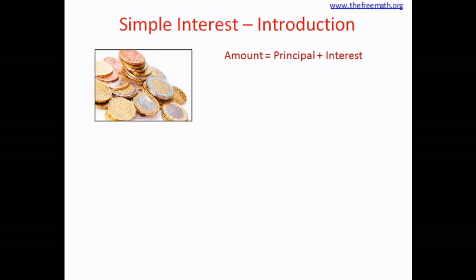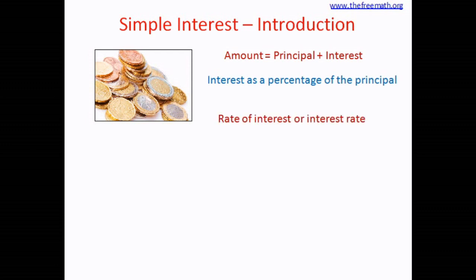Different banks at different times charge different interest, and that interest is typically defined as a percentage on the principal. It means that the bank says that per hundred rupees that you borrow, you pay this much amount as interest. We know that percent means per hundred. When the interest is charged as a percentage, that means it's charged per hundred rupees, and this is called the rate of interest or interest rate. The bank defines the interest rate, and based on that you pay interest when you borrow money, or the bank pays you when you deposit money.